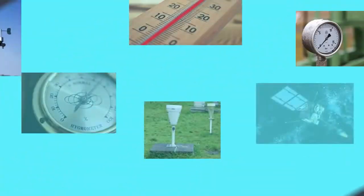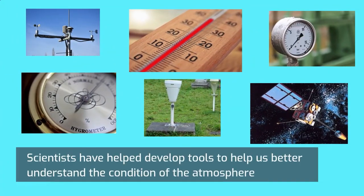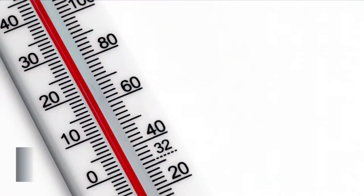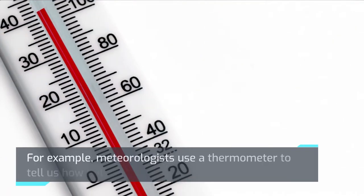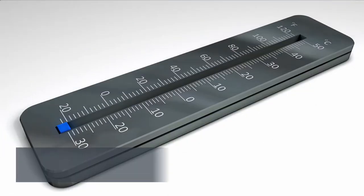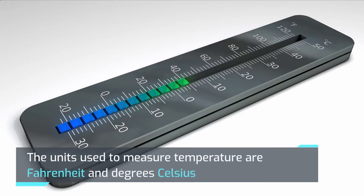Scientists have helped develop tools to help us better understand the condition of the atmosphere. For example, meteorologists use a thermometer to tell us how hot or cold the temperature is outside. The units used to measure temperature are Fahrenheit and degrees Celsius.